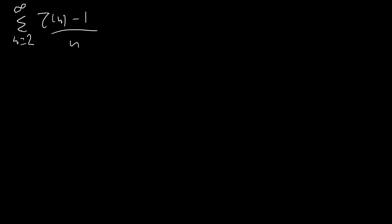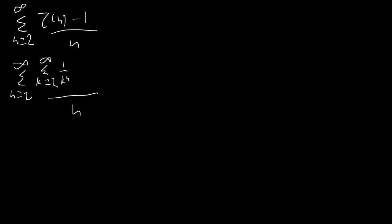If we go ahead and substitute that directly in, we get the sum from n equals 2 to infinity of the sum — now we have to use a different letter, let's use k — from k equals 1 to infinity of 1 over k to the n. Since we're subtracting 1 on the top, we can just write this as the sum from k equals 2 to infinity and remove that minus 1, because the first term when k equals 1 is just 1 over 1 to the n, which is 1, and subtracting that is the same thing. Reorganizing, we get the sum from n equals 2 to infinity of the sum from k equals 2 to infinity of 1 over n·k to the n.